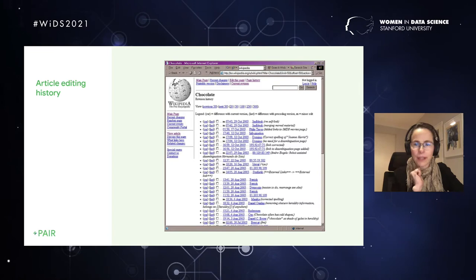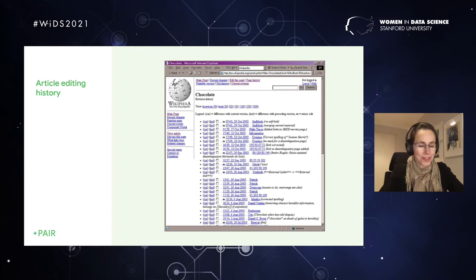We decided, oh, this is the data we want to visualize. These articles sometimes have hundreds, thousands of pages of logs, because a lot of these pages tend to be very actively edited. So how might you visualize something like this?